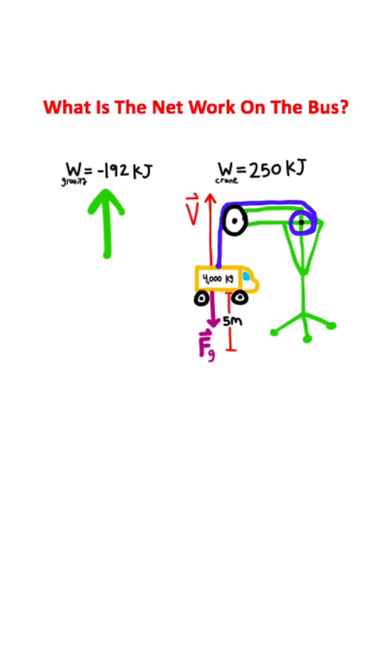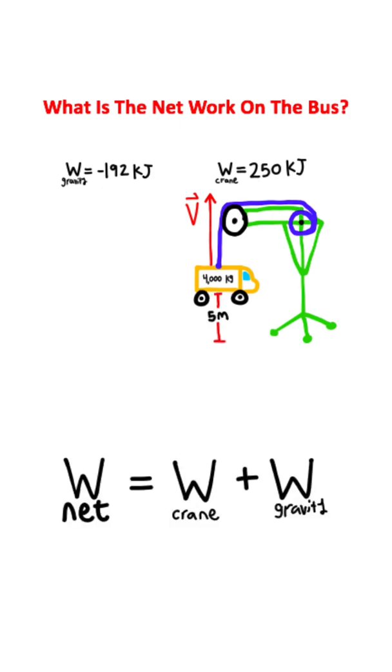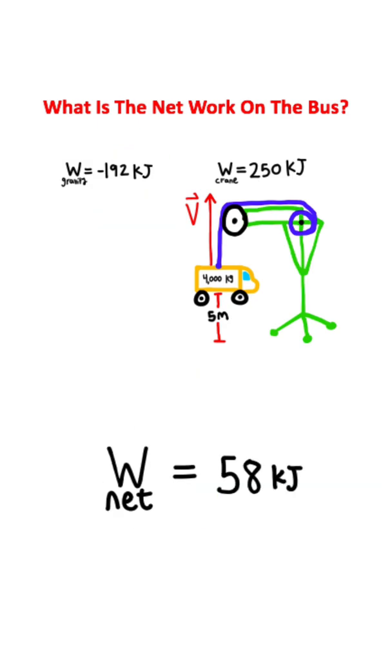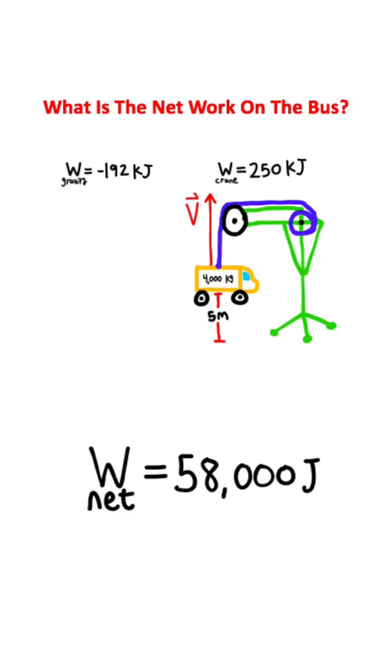So now that we have our work by gravity and we have the work by the crane, we can calculate our net work. The net work is going to be the work by the crane and the work by gravity added together. So the work due to the crane, you can plug in right here. The work due to gravity, you can plug in right here. Adding 250 to negative 192 is going to give you 58 kilojoules, which can also be rewritten as 58,000 joules. And that right there is the answer to the net work acting on the bus.